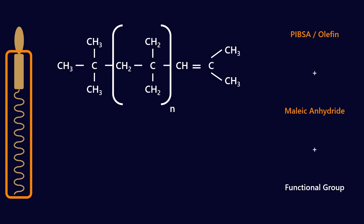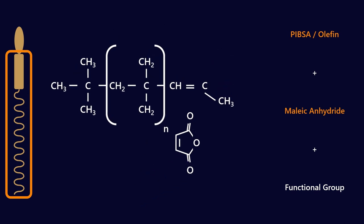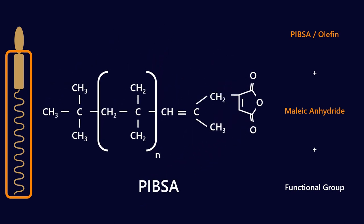So what we're going to do is we're going to react that with what we call a maleic anhydride and when you react those two together what you get is PIBSA. This is a polyisobutylene succinamide, we just call it PIBSA for short.